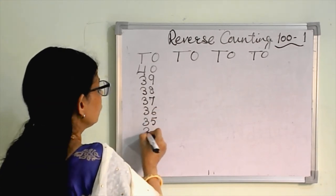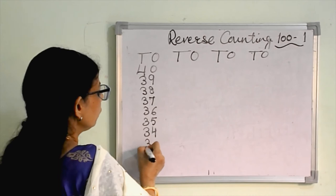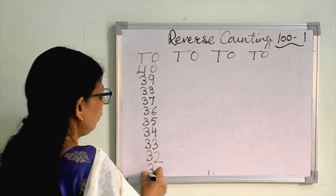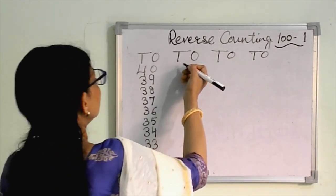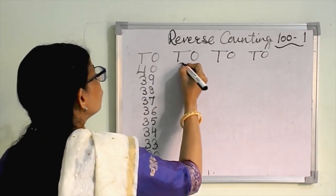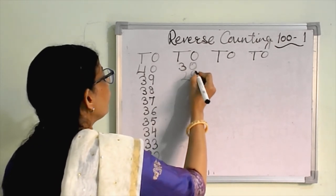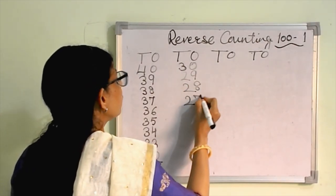What we will write here? Thirty on the top. We will write thirty, less one, twenty-nine, less one, twenty-eight, less one, twenty-seven, twenty-six, twenty-five, twenty-four, twenty-three, twenty-two, and twenty-one.